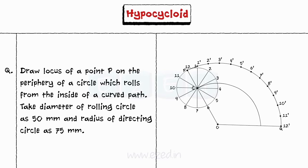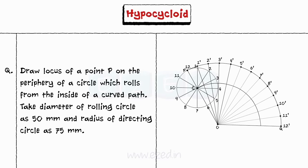Name the given points as shown. Step 6: The intersection of lines O1', O2', O3', O4', etc. with the locus of center C gives points C1, C2, C3, C4, etc.